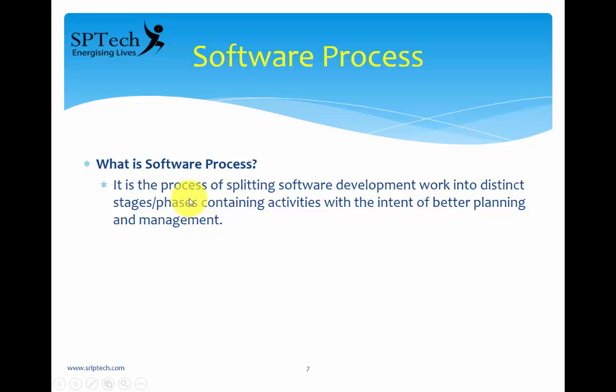If you consider a small analogy of building a house, what are the different phases? First, you need to level the ground — that is stage one. After leveling the ground, you lay the foundation — stage two. After laying the foundation, you construct the walls — stage three. After constructing the walls, you plaster them — stage four. Then you put on the roof — stage five, and it goes on. All these are various stages of house construction. Similarly, if you want to build a reliable software product, you need to follow a software process.